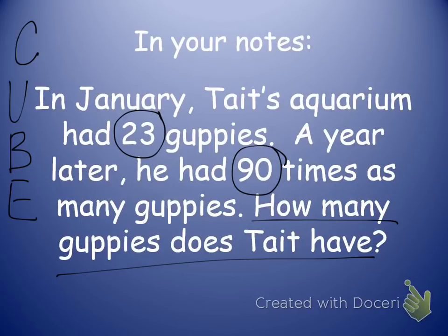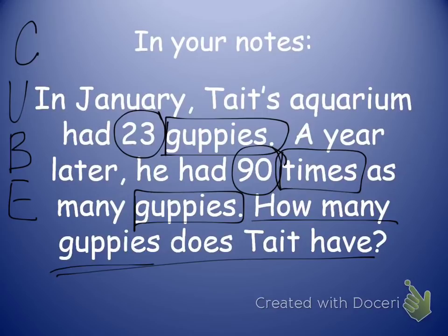Box in all my important words. Tate's aquarium had 23 guppies. A year later, he had 90 times as many guppies. So I know that guppies is going to be my label when I'm all done.